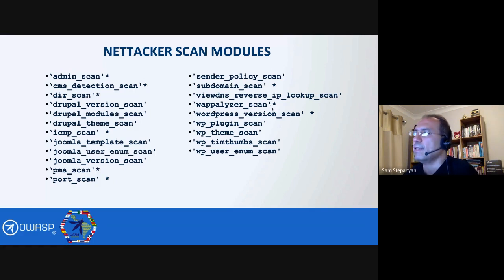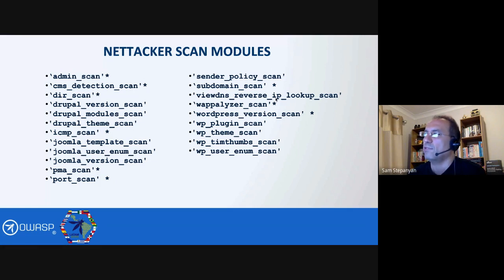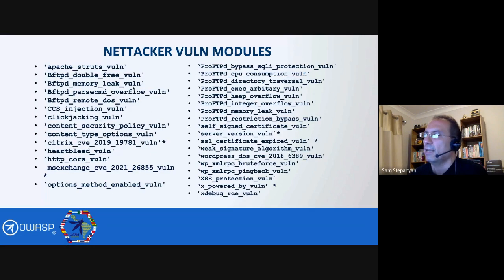Wappalyzer scan can perform a scan using the Wappalyzer tool to identify all technologies running on a website. The WordPress version scan tries to identify the version of WordPress, and there are several scanning modules for WordPress plugins, themes, user enumeration, and other related tasks.